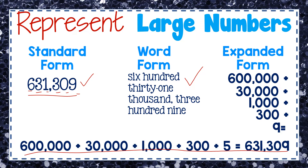I want to point out that in the tens place there is a zero, so the tens place has a value of zero. I don't have to put anything in expanded form for it — there's nothing to put because the value is zero. So in expanded form it goes from the hundreds place, skips the tens place since there's no value, and goes directly to the ones place.